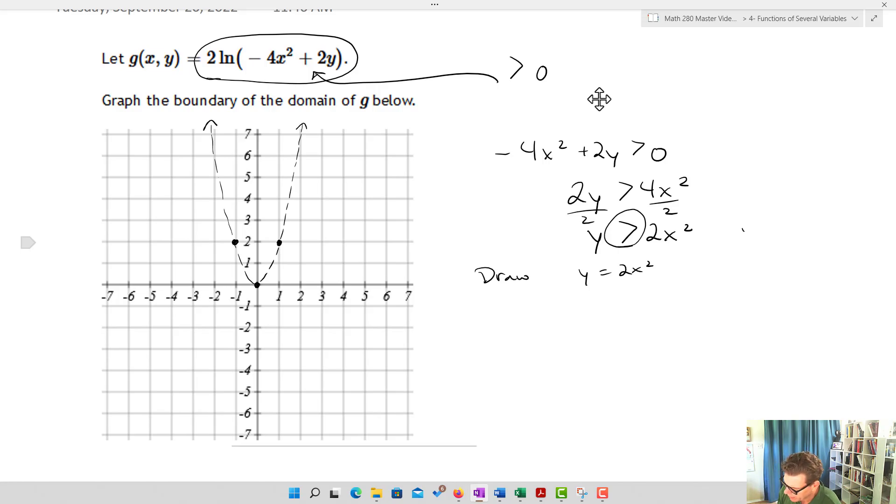Okay, because what we've got there is we've got the strictly greater than, all right. So we drew y equals 2x squared with the dotted line.